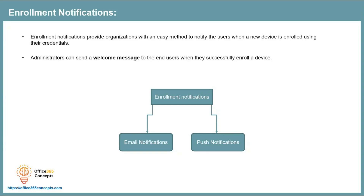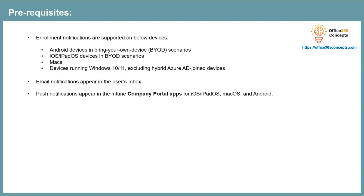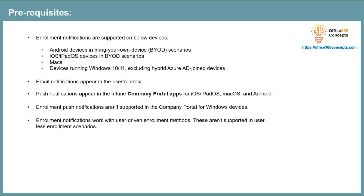Before you start managing enrollment notifications, you should be aware of a few things. Enrollment notifications are supported on Android devices in bring-your-own-device scenarios, on iOS or iPad devices for bring-your-own-device scenarios, on Mac devices, and on Windows 10 or 11 devices, excluding hybrid Azure AD joined devices. Email notifications appear in the user's inbox, and push notifications appear in the Intune Company Portal app for iOS, iPad, Mac, and Android devices. Push notifications are not supported in the Company Portal app for Windows devices. Also, enrollment notifications are supported with user-driven enrollment scenarios only — they do not work on devices enrolled by administrators.